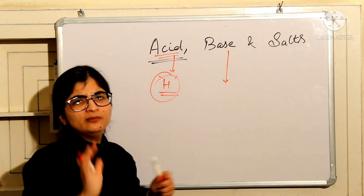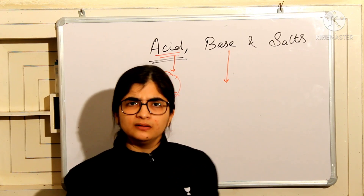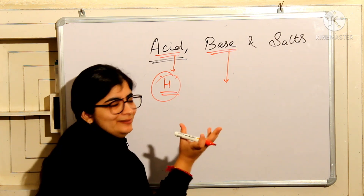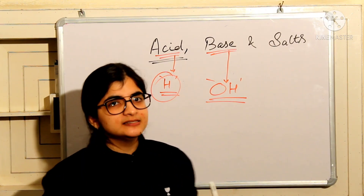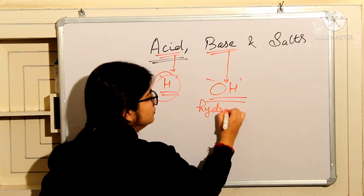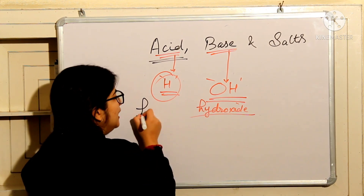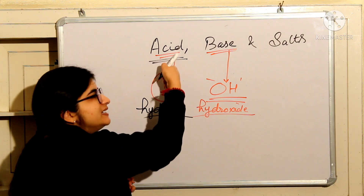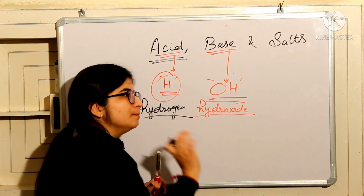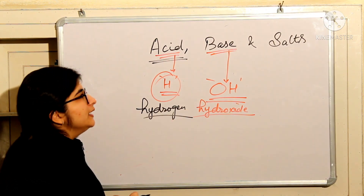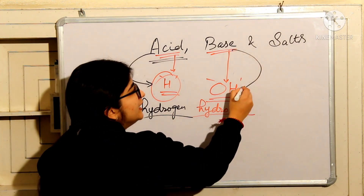What is Base? You know — bitter taste, opposite of acid. Whatever acid does, base does the opposite. Simple. But what must a base have compulsorily? That is OH — hydroxide. O and H. Its name is hydroxide, also called OH. So for acid the compulsory part is hydrogen, and for base the compulsory part is OH.